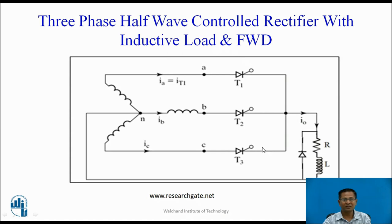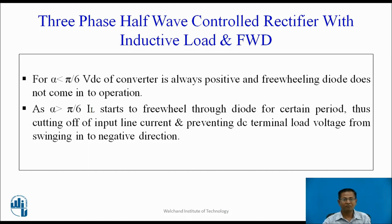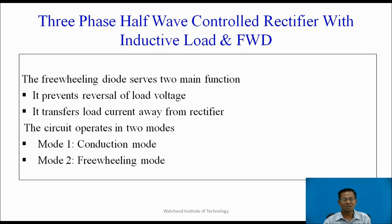Three-phase half-wave controlled rectifier with inductive load and freewheeling diode: A diode is connected across the inductive load — called the freewheeling diode, sometimes also called a bypass diode or commutating diode. For alpha less than pi by 6, Vdc of the converter is always positive and the freewheeling diode does not come into operation. As alpha is greater than pi by 6, the load current starts to freewheel through the diode for a certain period, cutting off input line current and preventing DC terminal load voltage from swinging into the negative direction. The freewheeling diode serves two main functions: it prevents reversal of load voltage, and it transfers the load current away from the rectifier. The circuit operates in two modes: Mode 1 — conduction mode, and Mode 2 — freewheeling mode.